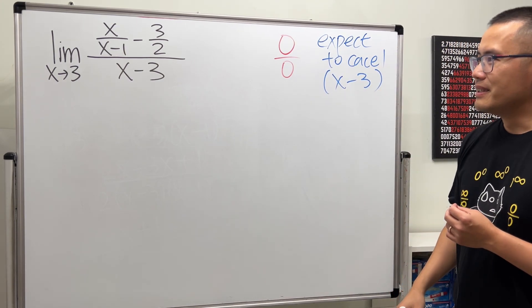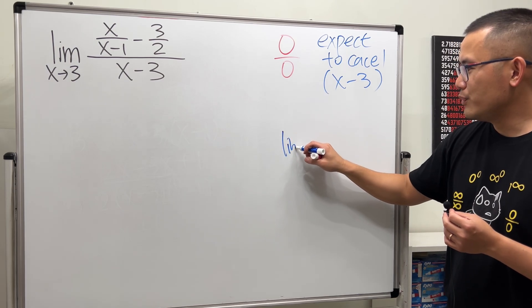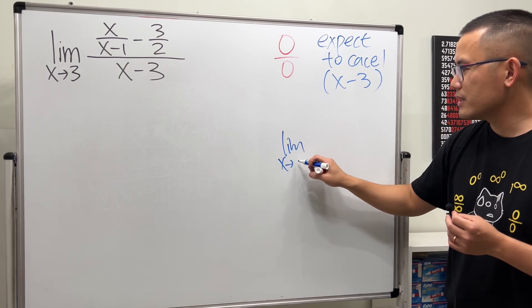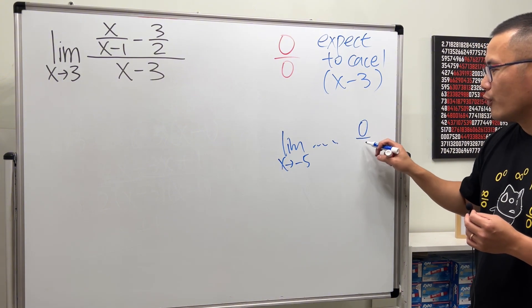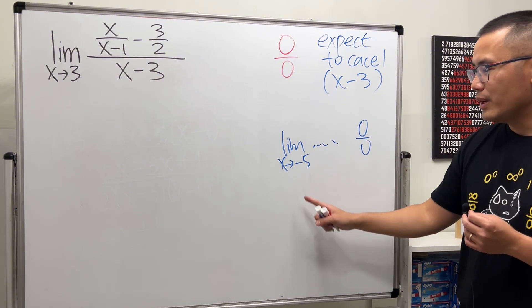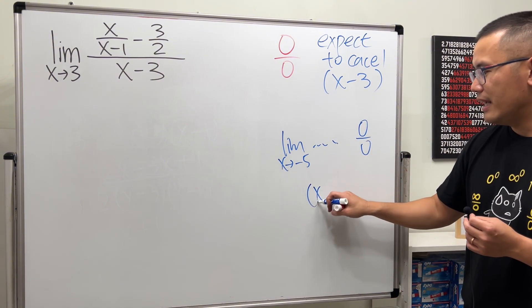All right, so let me give you guys another example. If you are working with the limit as x approaching, let's say negative 5, of some function, if you end up with 0 over 0, then you're expecting to cancel out x plus 5.